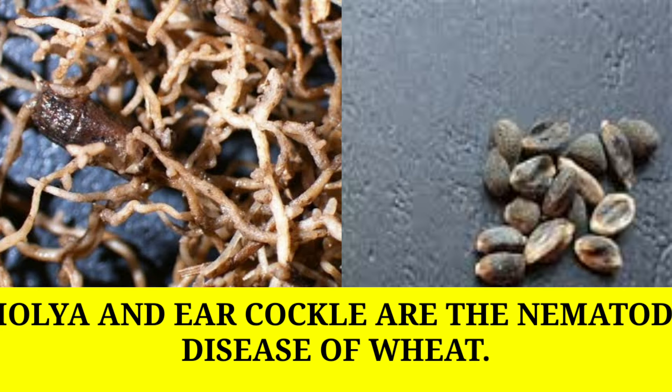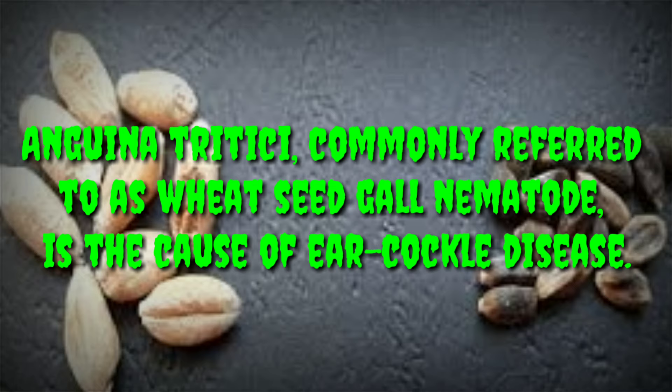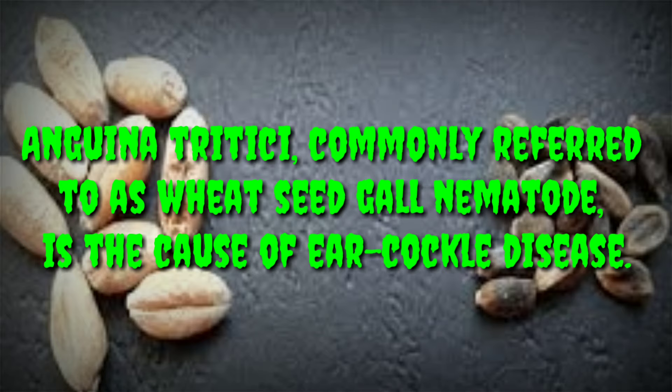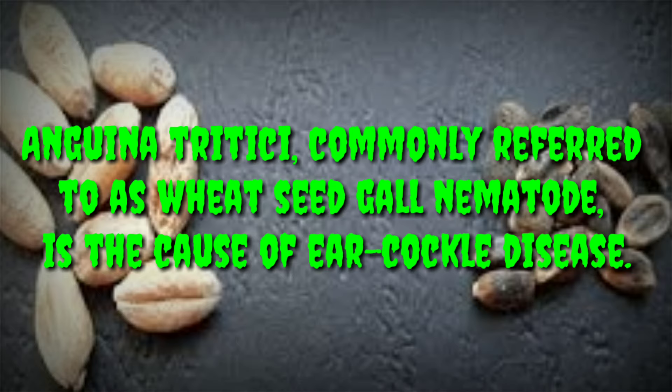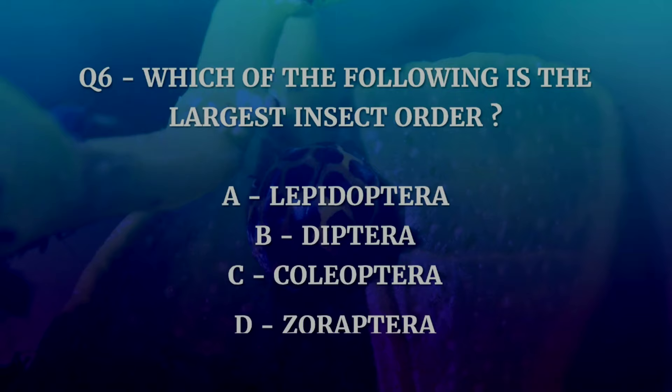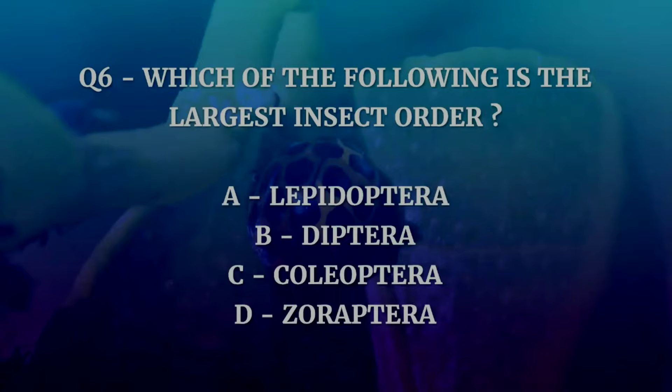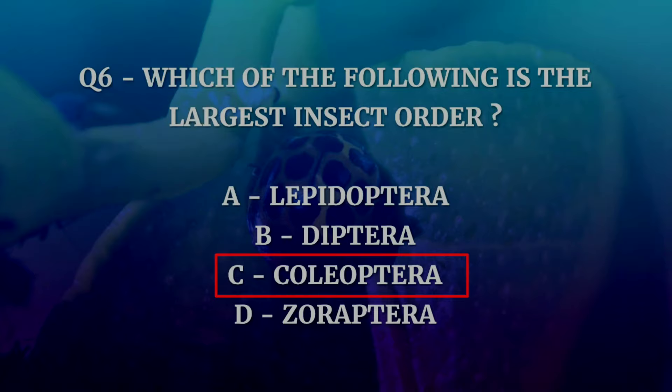Ufra is a nematode disease of rice, whereas Molya and ear cockle are nematode diseases of wheat. Anguina tritici, commonly referred to as wheat gall nematode, is the cause of ear cockle disease. It was the first plant parasitic nematode to be described in scientific literature in 1743. Question number six: which of the following is the largest insect order? The options are Lepidoptera, Diptera, Coleoptera, or Zoraptera. The correct answer is Coleoptera.